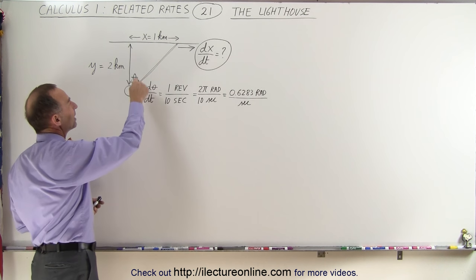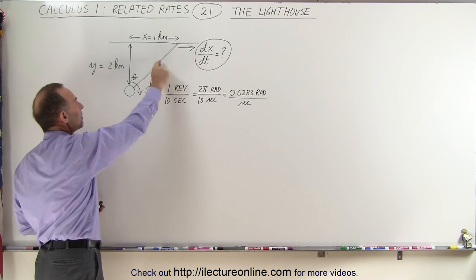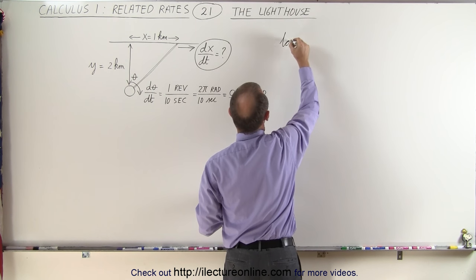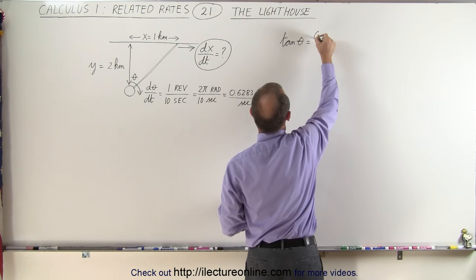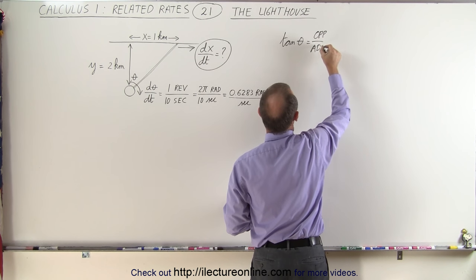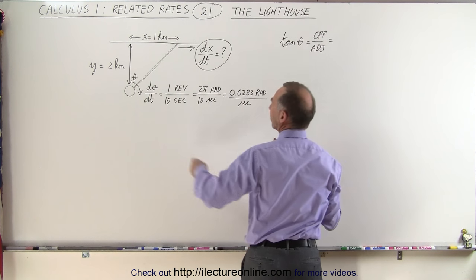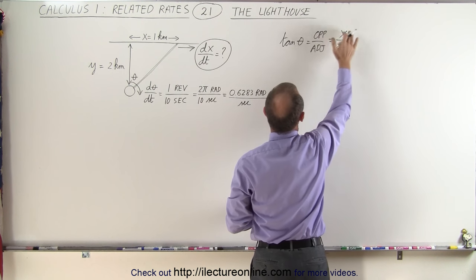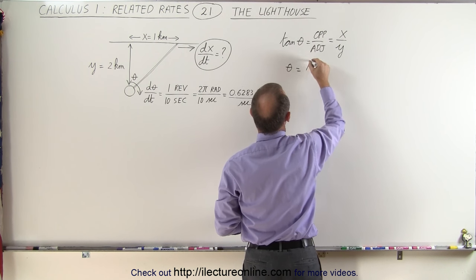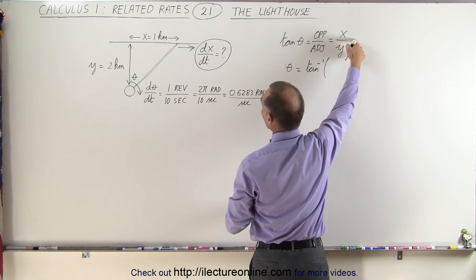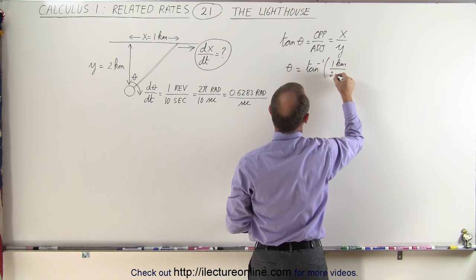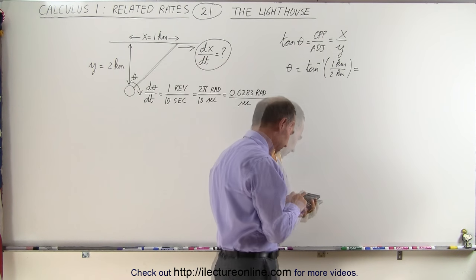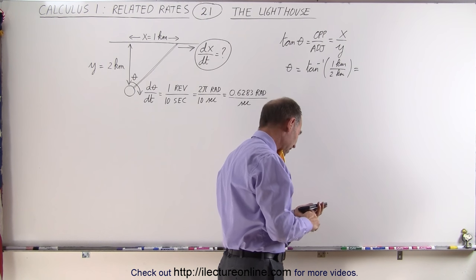Well first, what we need to find is the angle that the beam makes with the vertical, and we can do that using the tangent. We know that the tangent of theta by definition is equal to the opposite side over the adjacent side. In this case, the opposite side to the angle would be x and the adjacent side would be y, so tan(θ) = x/y, or θ = arctan(x/y) = arctan(1 km / 2 km). We're finding the arctan of 0.5, and that would be 26.565 degrees.